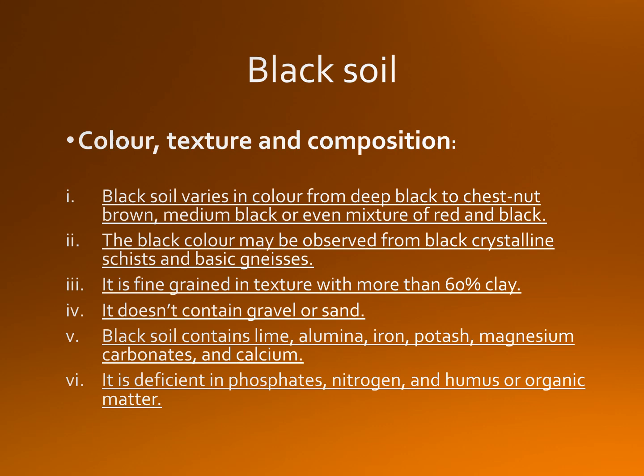Black soil contains lime, alumina, iron, potash, magnesium carbonates, and calcium. It is deficient in phosphates, nitrogen, and humus or organic matter. A typical black soil is highly argillaceous — that is, clay — with a large clay factor of around 62 percent or more, without gravel or coarse sand. It also contains 10 percent alumina, 9 to 10 percent iron oxide, and 6 to 8 percent lime and magnesium carbonates. Potash is variable at less than 0.5 percent, and the structure is cloddy but occasionally friable.